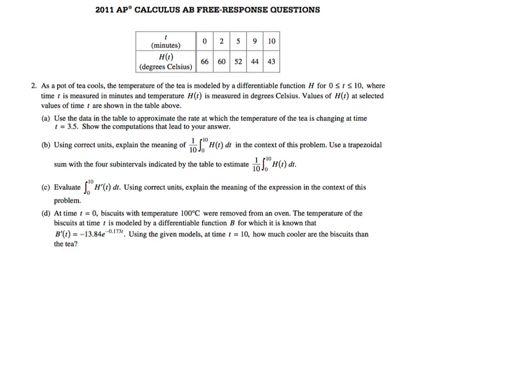It says as a pot of tea cools, the temperature of the tea is modeled by a differentiable function H for T between 0 and 10, where time T is measured in minutes and temperature H(t) is measured in degrees Celsius. Values of H(t) at selected values of time T are shown in the table above. Anyway, so we've got this table.